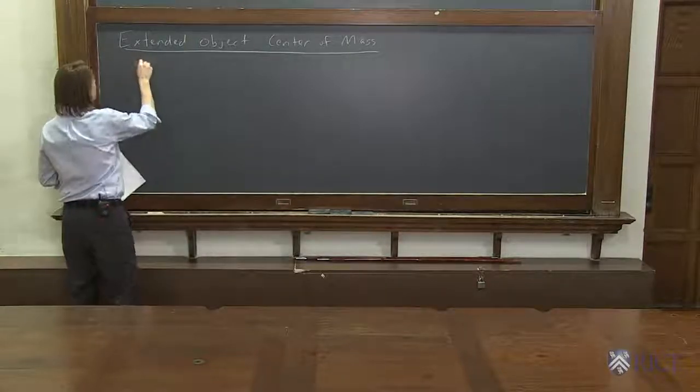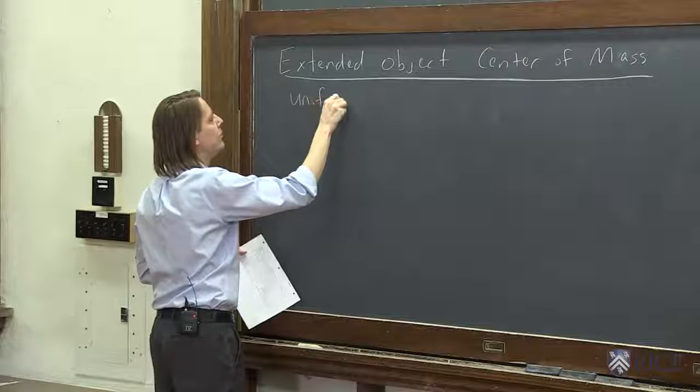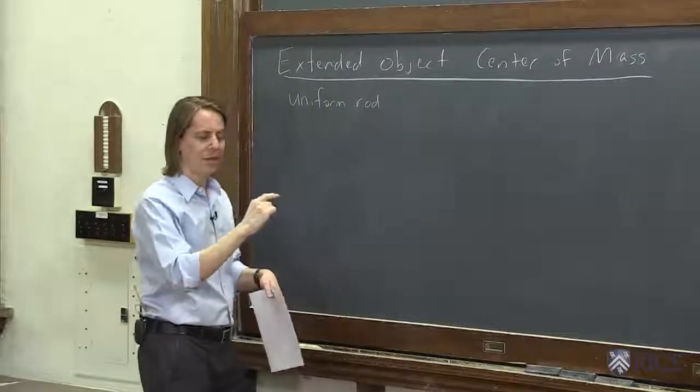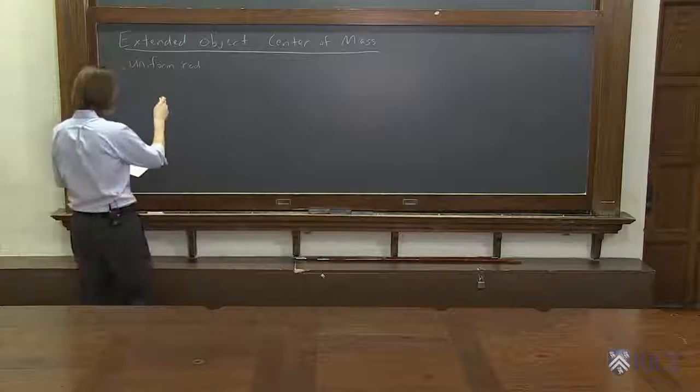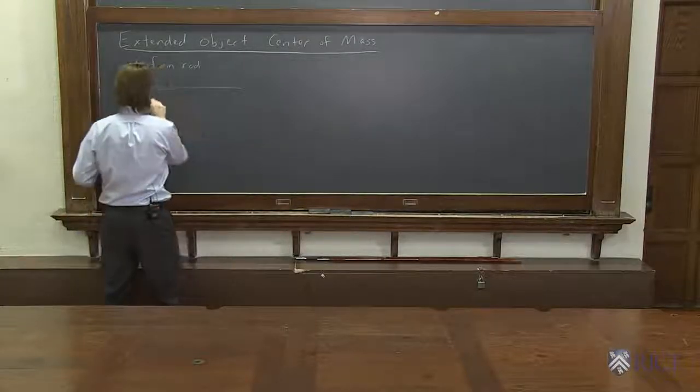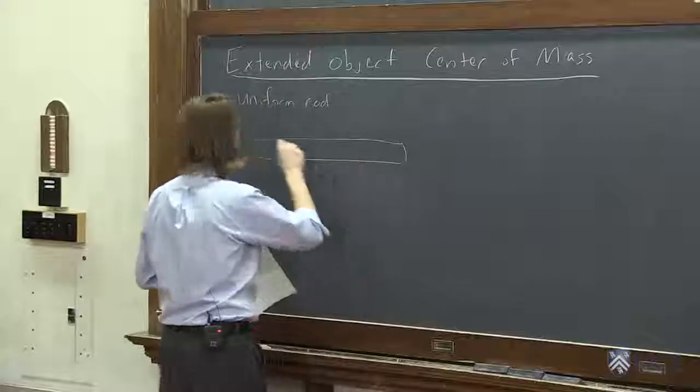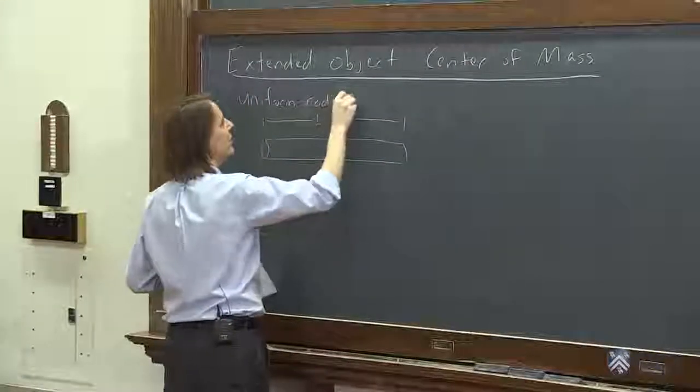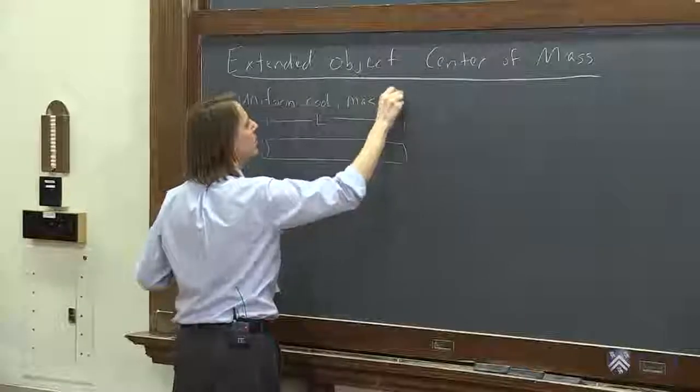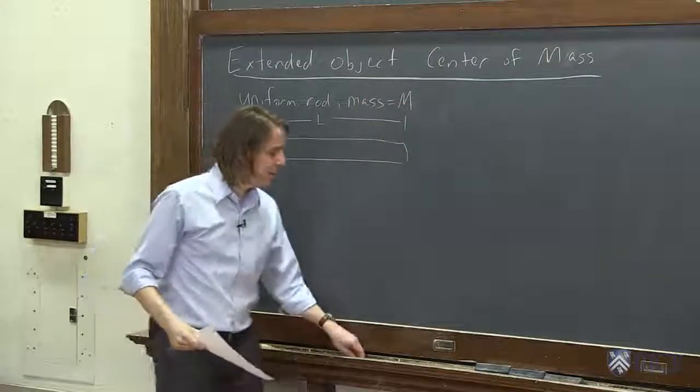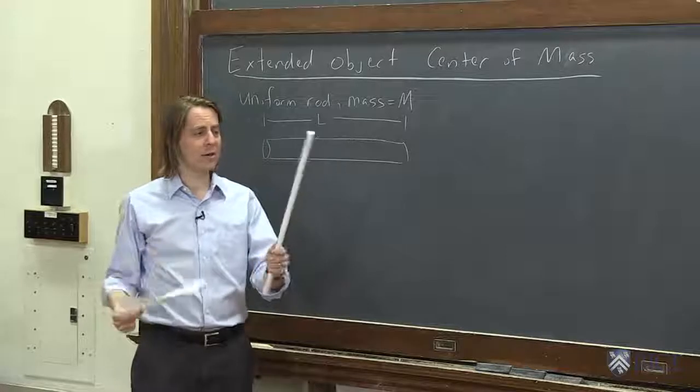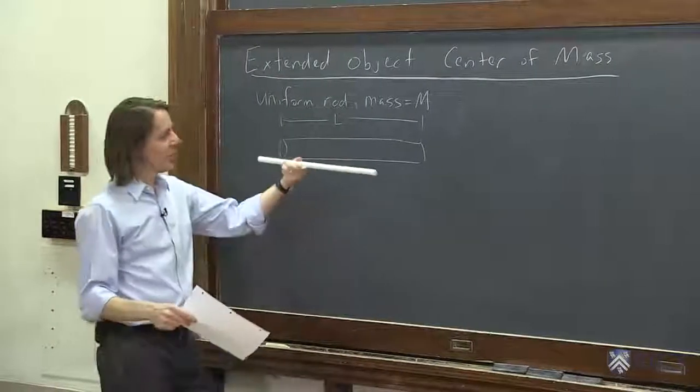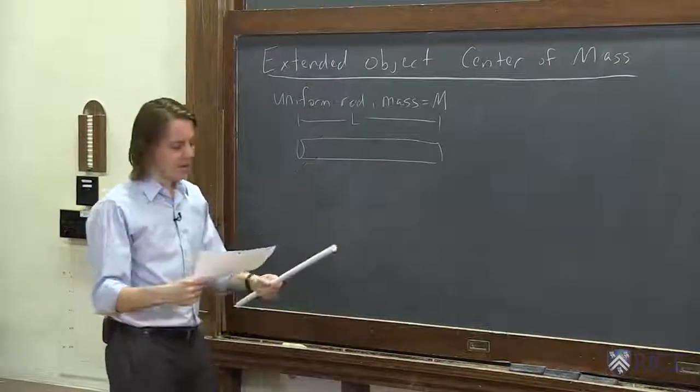We're going to start with the simplest one, a uniform rod. So uniform means it's a constant diameter and a constant mass density. It's just a rod like this. It's got a length L and a mass M, big M. I happen to have one here. If you take 102x, my electricity and magnetism course, you'll become very familiar with this. This is my Teflon rod. It's exactly what we're talking about here. We've got to find its center of mass.